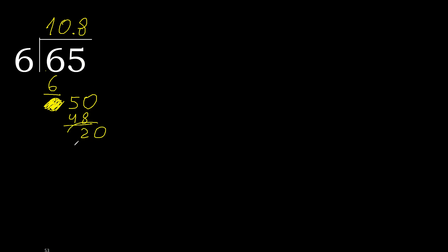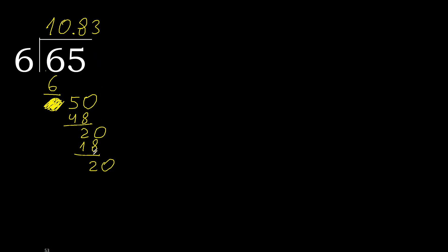Point is here. 20. 6 multiplied by 3 is 18. Subtract. Complete — 0 point.